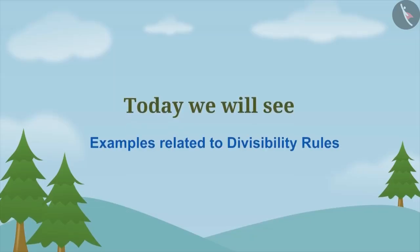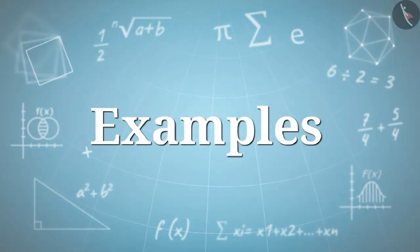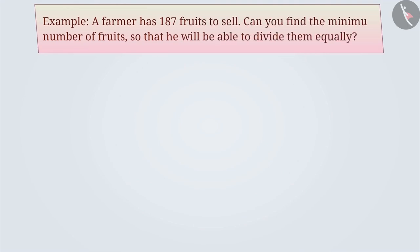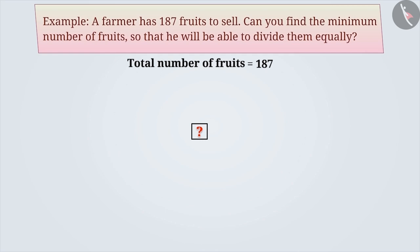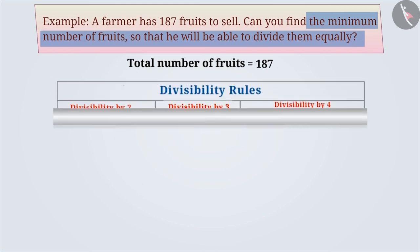Today, we will see some examples related to divisibility rules. A farmer has 187 fruits to sell. Can you find the minimum number of fruits so that he will be able to divide them equally? From the given example, the total number of fruits is 187. Since the number of fruits in each bag has to be the same, we have to find the smallest number that will divide 187 completely. In order to find this, we will use the divisibility rules.